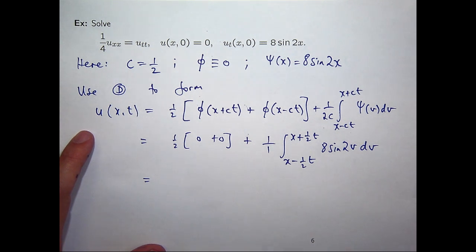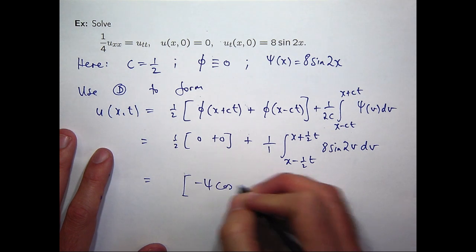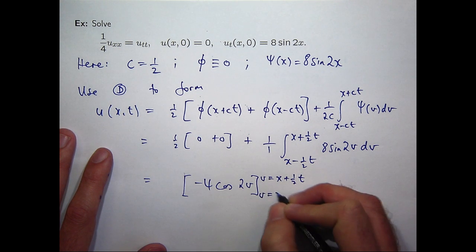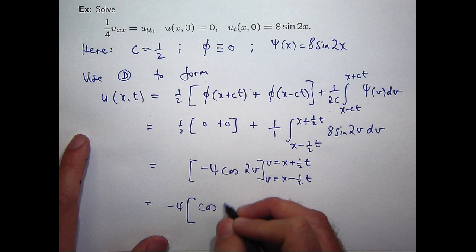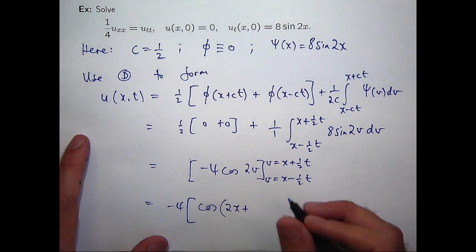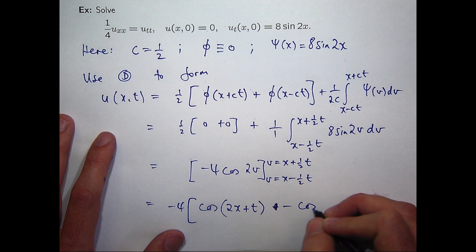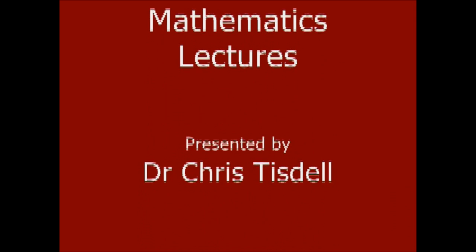So, all I need to do is that final integration, and I'm finished. So, this integral is going to become something like minus cosine two v, and there'll be a factor of four out the front. So, if I sub in, I'll get the following. So, all I need to do is complete this calculation.